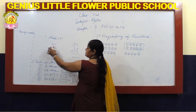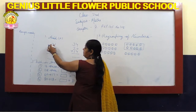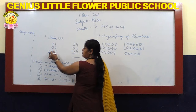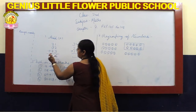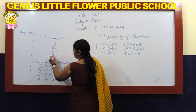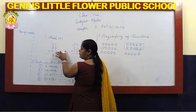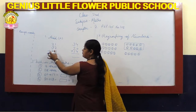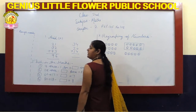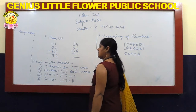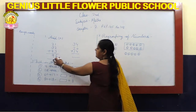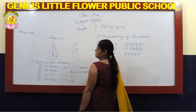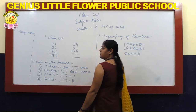2 plus 3 is 5. 5 plus 4 is equal to 9. Step 1: we add 1s. Step 2: we add 10s. 9 tens, 6 ones. 96.